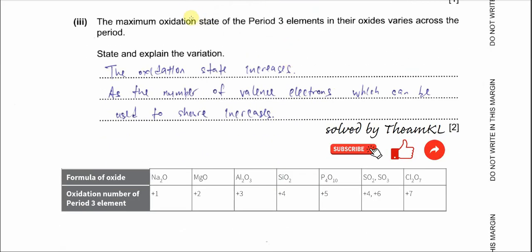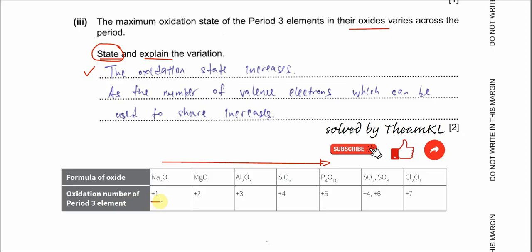Part 3: the maximum oxidation state of period 3 elements in their oxides varies across the period. The first statement is that the oxidation state increases across the period. You can see that the oxidation number for these period 3 elements increases from +1, +2, +3, +4, +5, +6, to +7.